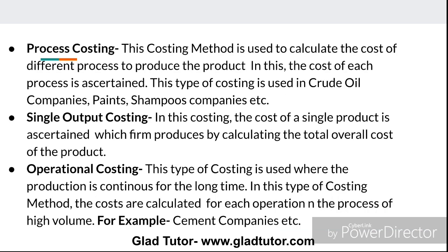Firstly, we will talk about process costing. This costing method is used to calculate the cost of different processes to produce the product. In this, the cost of each process is ascertained. This type of costing is used in crude oil companies, paints, and shampoo companies.